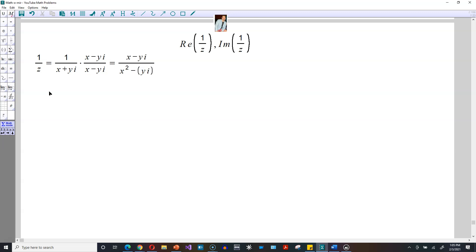And at the top, you have here x minus yi. At the bottom, though, you're going to have x squared minus y squared, and then i squared.